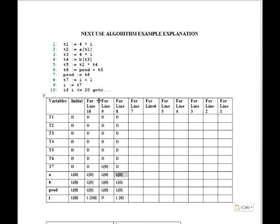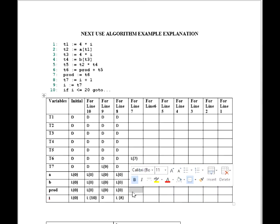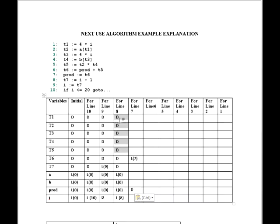Now at line number 7, T6 is live and prod is dead. T6 is live at line number 7 — not six — so we put L7 on T6, and we put D on prod marking it dead. The rest of the values will be the same as line number 8.